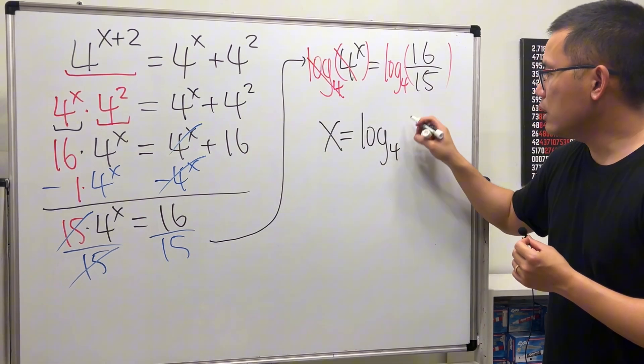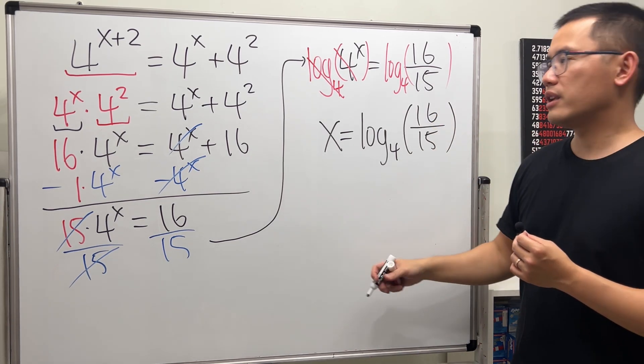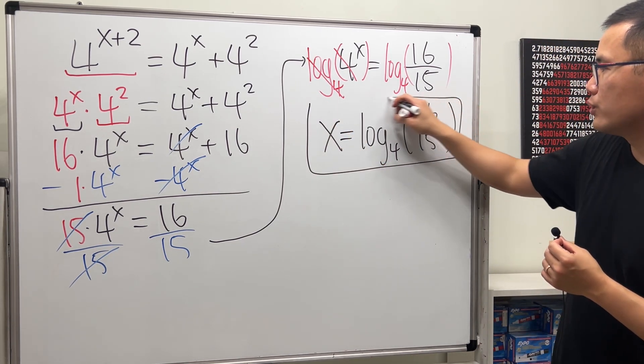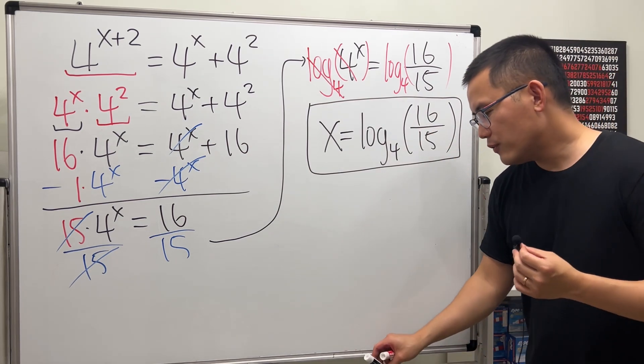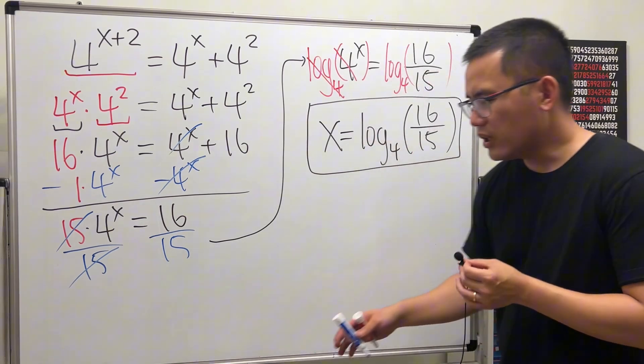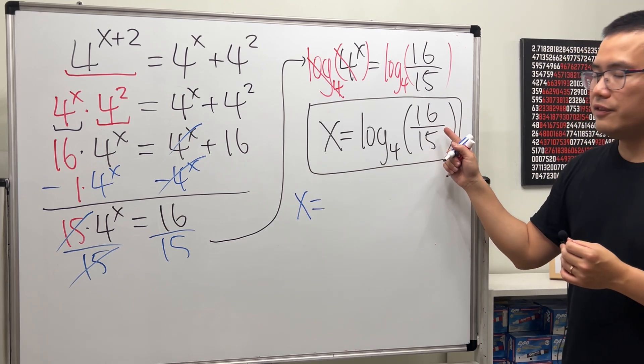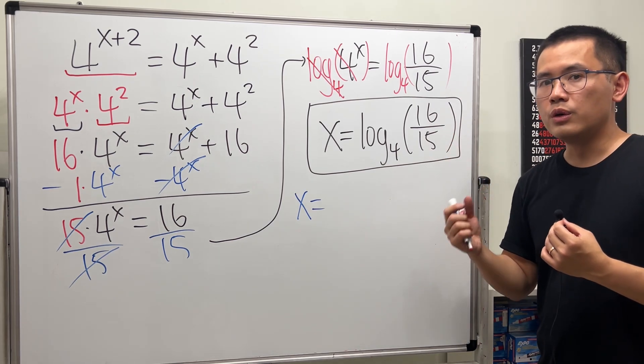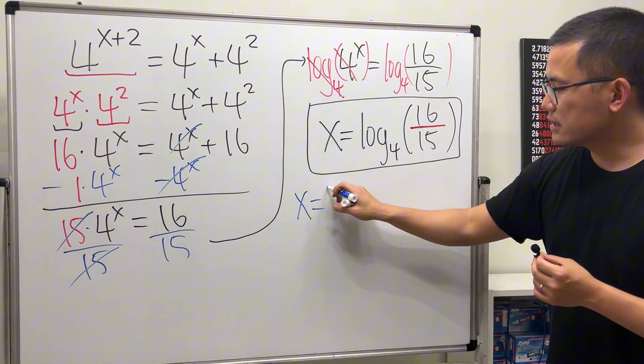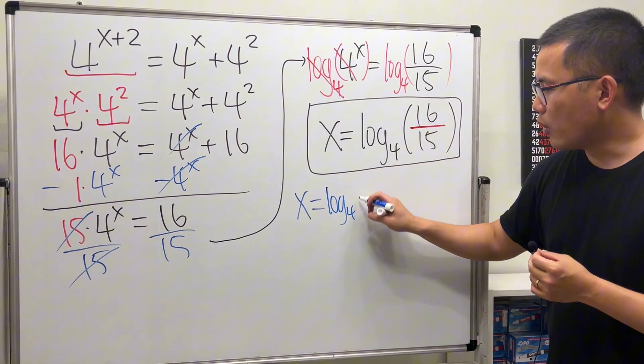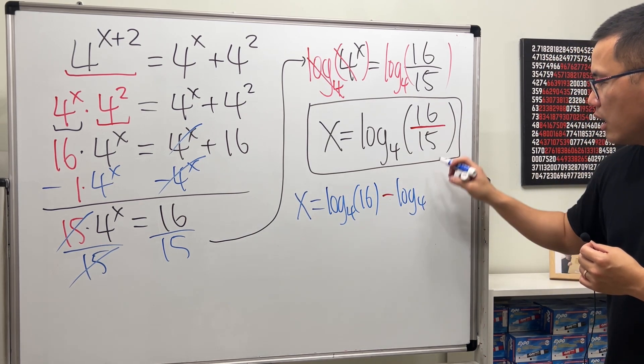This right here will do it. If you want to have everything in just one logarithm, this is perfectly okay. But if you want to practice a little bit, we can use some log properties. When we have a division inside of a log, we can turn that into subtraction of two logs. Because of this division, we can write it as log base 4 of the top minus log base 4 of the bottom.